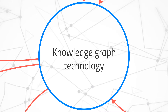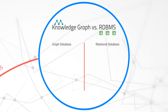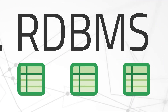One topic of discussion that often pops up when we talk about knowledge graph technology is how they compare against relational database management systems, or RDBMS for short. Relational databases are quite different from graph databases in that they store data in tabular format, as opposed to the sort of network format we see in graph databases.